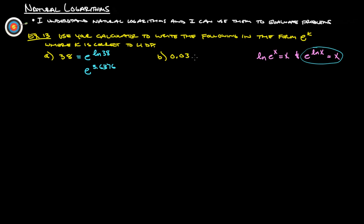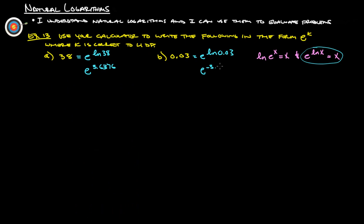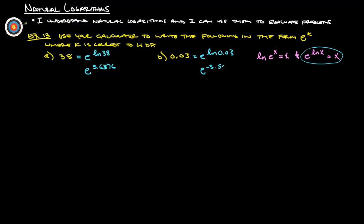Same thing with this one here. This is going to be E to the natural log of 0.03. So same idea. We're just going to find the natural log of 0.03. And we get negative 3.5066. And we are done with both of those.